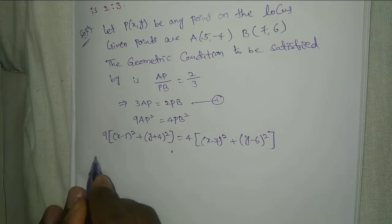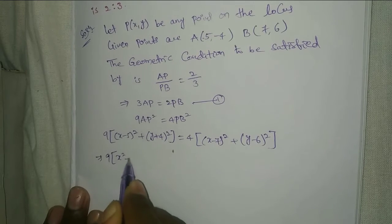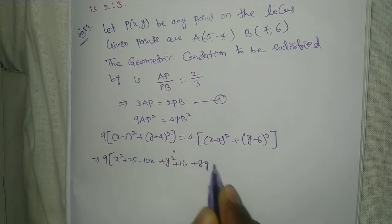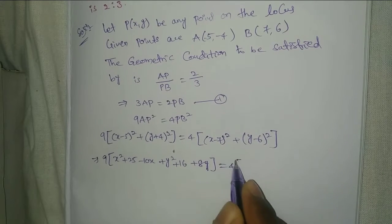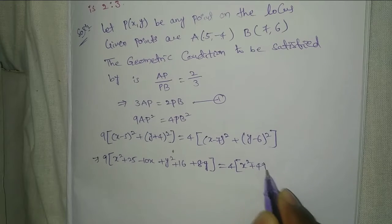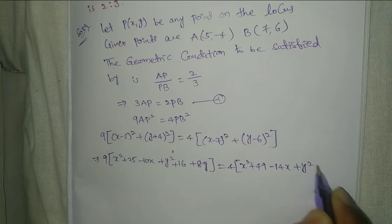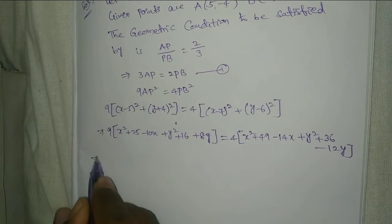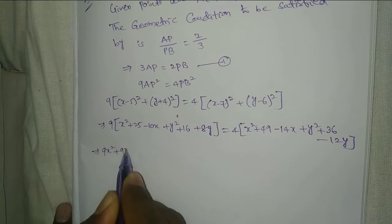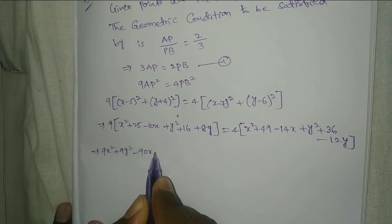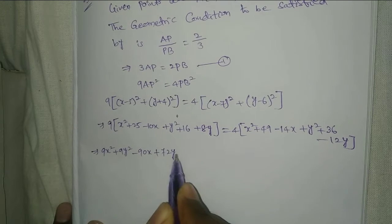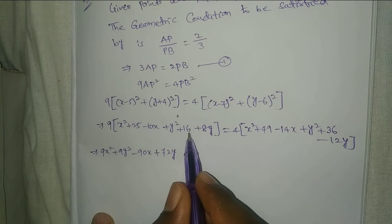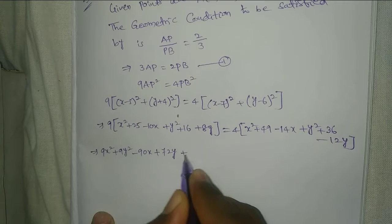Expanding: 9 into (x² + 25 - 10x + y² + 16 + 8y) = 4 into (x² + 49 - 14x + y² + 36 - 12y). That gives 9x² + 9y² - 90x + 72y + 41×9 = 4x² + 4y² - 56x - 48y + 85×4. So 9x² + 9y² - 90x + 72y + 369.